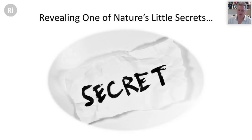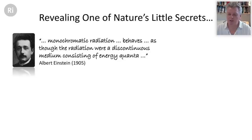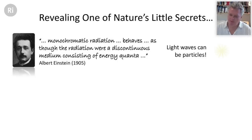That was fine until 1905, when one of nature's dirty little secrets was revealed. Albert Einstein first suggested that monochromatic radiation — light of a single wavelength or color — behaves as though it were a discontinuous medium consisting of energy quanta. What he was basically saying is that what we take to be light waves can also be described as particles. We call these particles photons, and yet light also undergoes diffraction and two-slit interference phenomena describable in terms of waves.